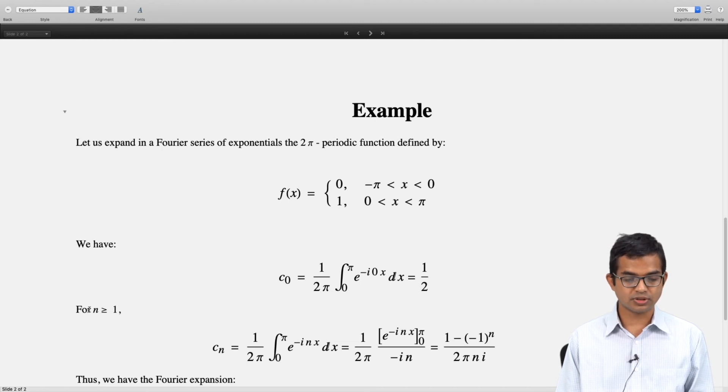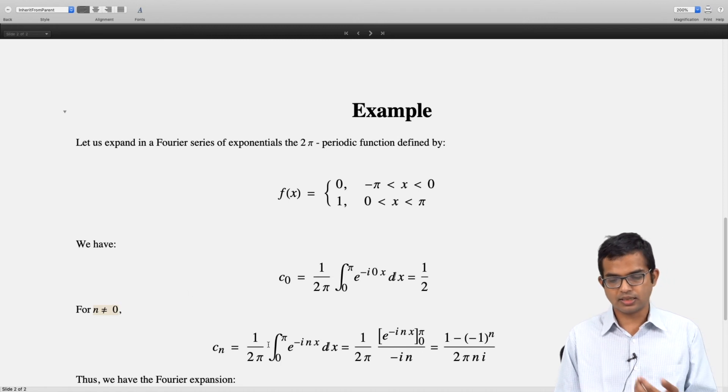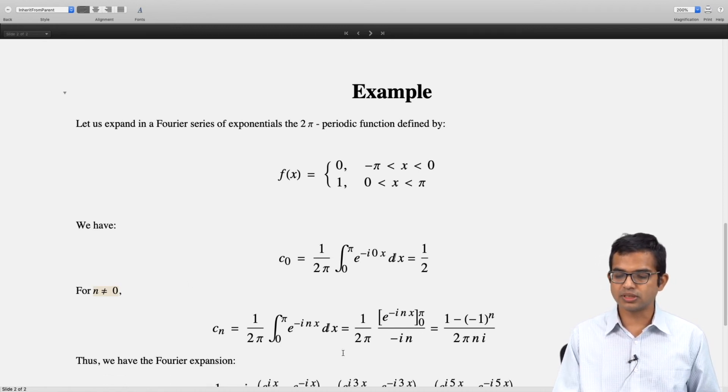For n not equal to 0, cₙ is given by this expression, which you can check is just (1 - (-1)^n)/(2πni).